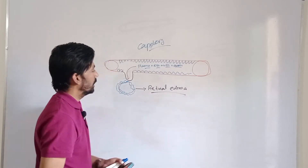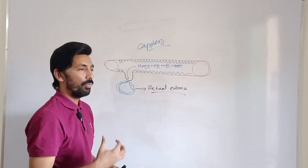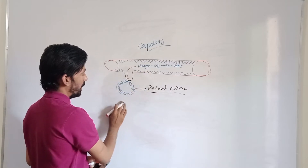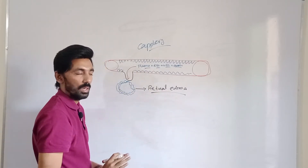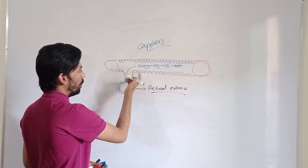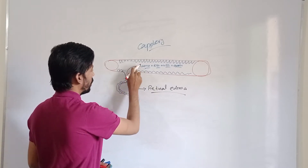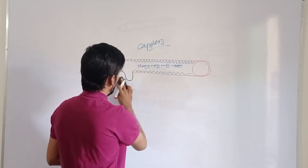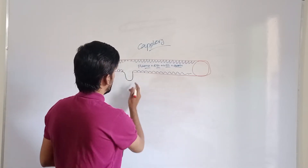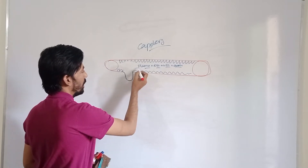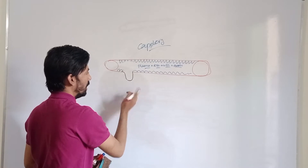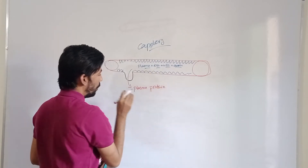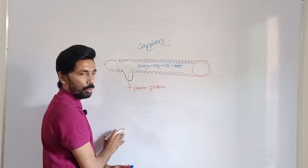Now we will discuss the hard exudates — what is the pathophysiology, what is the story behind their formation? Plasma has come out and made retinal edema. After the plasma, the plasma proteins will also come out of the microaneurysm into the retinal tissue.